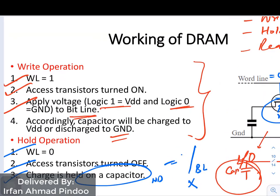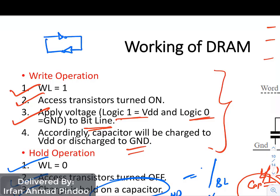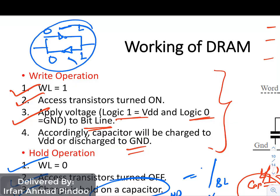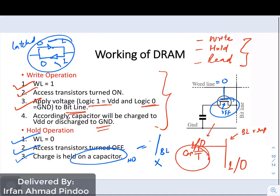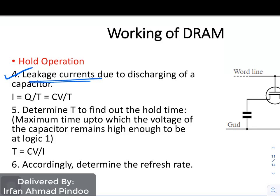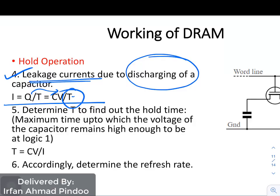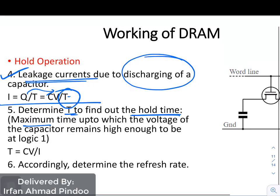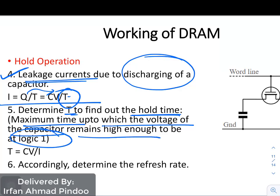We need to understand how this differs from SRAM. In SRAM, data was latched by the latch circuit with no problem. But in dynamic RAM, the capacitor will discharge and once it starts discharging we lose the data. There will be a leakage current causing discharging, and you can calculate the time from the equations: current = Q/t and Q = CV. This time T tells you about the hold time — the maximum time up to which the capacitor voltage is interpreted as logic 1 — and that determines the required refresh rate.